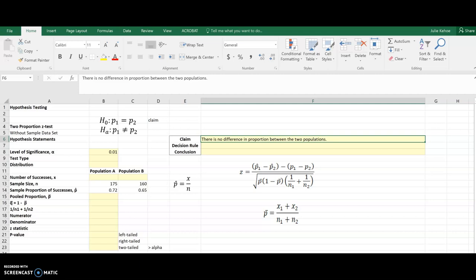This video is going to show you how to do a two proportion z-test in Excel. I'm going to start with the claim I have here: there is no difference in proportion between two populations. I'm given a level of significance and the sample sizes and the proportions.